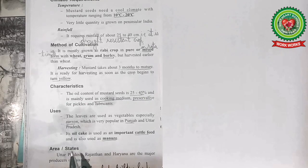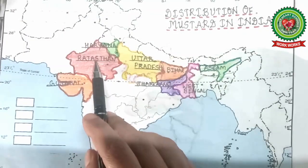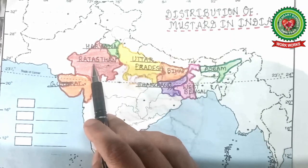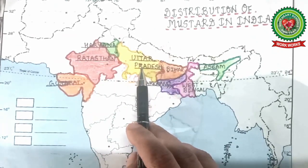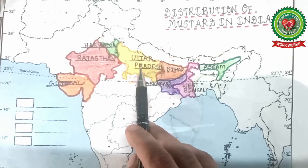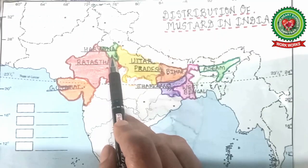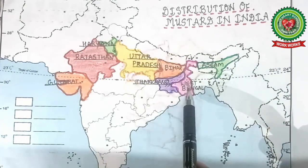Now let us go through the area states where mustard is produced in India. Uttar Pradesh, Rajasthan, and Haryana are the major producers of this crop. Rajasthan is the largest producer of mustard in India with about 44.03 percent of total production. Uttar Pradesh is the second largest producer, accounting for nearly 10.55 percent. Haryana comes next with a total production of 8.50 percent. Other states where mustard is grown include Bihar, Jharkhand, West Bengal, and Assam.